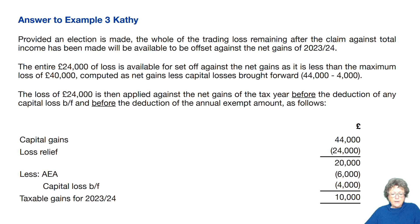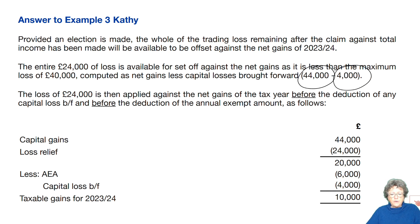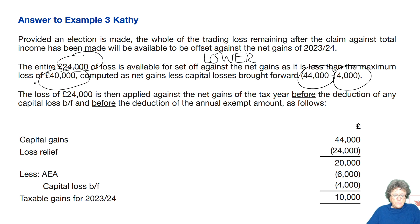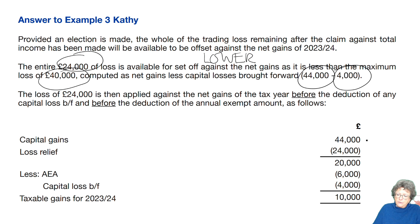The entire £24,000 loss is available to set off against the net gains, as it is less than the maximum amount. The maximum amount is the amount of gains in the year less any losses in full — so it is less than that amount, and therefore it's the lower of the two: the relevant amount and the maximum amount. The loss of £24,000 is then applied against the net gains in the tax year before the deduction of losses brought forward and before the deduction of the annual exempt amount. So we have capital gains of £44,000 per the question, maximum loss relief set off, then the annual exempt amount, then we take off the loss — so the gains in that year are now reduced down to £10,000.